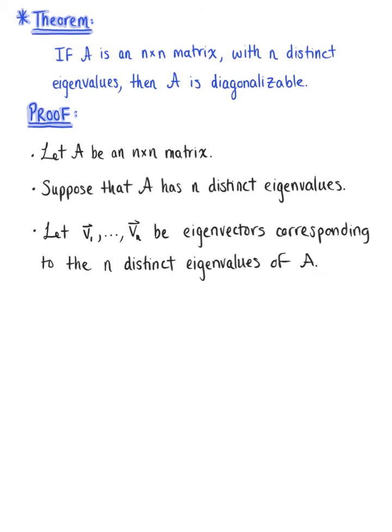Let vector v sub 1 through vector v sub n be eigenvectors corresponding to the n distinct eigenvalues of matrix A.